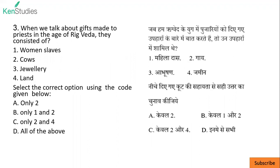Next. When we talk about gifts made to priests in the age of Rig Veda, they consist of: Rig Veda — yani sabse pahla jo ved hai wo Rig Veda hai. Us Rig Veda mein Brahman, yani pujariyon ko jo diya jata tha tohfe ke taur pe, usmein shamil hote the: women slaves, cows — aur jewelry or land.